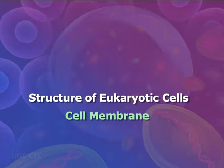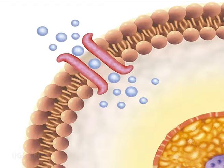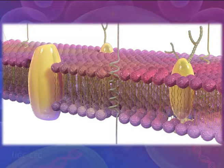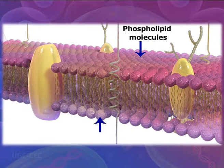The cell membrane is a complex barrier separating every cell from its external environment. It is a fluid mosaic of proteins floating in a phospholipid bilayer. The cell membrane functions like a gate, controlling which molecules can enter and leave the cell. Carrier proteins in or on the membrane are specific, only allowing a small group of very similar molecules through, while many molecules cannot cross at all. For this reason, the cell membrane is said to be selectively permeable.